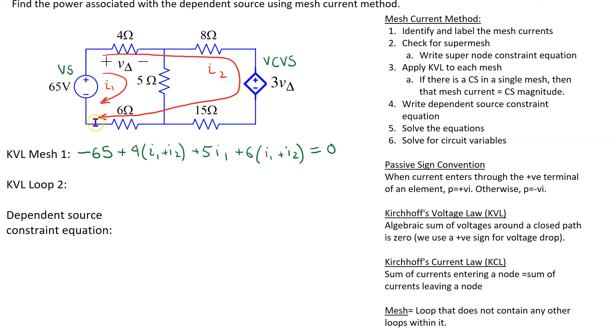Next we apply Kirchhoff voltage law to loop 2. So this loop starts here, goes through the two resistors the dependent source and then comes back at the independent voltage source. Starting at this voltage source, the first term is minus 65. Then for the 4 ohm resistor we have 4(I1 plus I2).